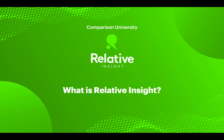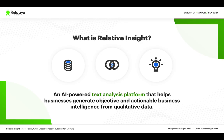Welcome to this episode of Comparison University. What is Relative Insight? Relative Insight is an AI-powered text analysis platform that helps organizations generate objective and actionable business intelligence from their qualitative data. In other words, we help you turn words into insights.